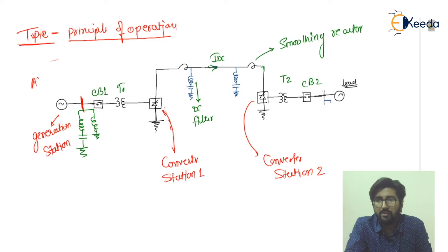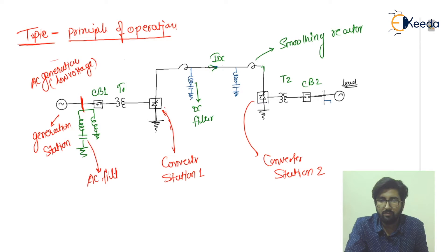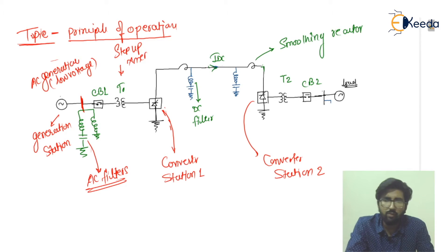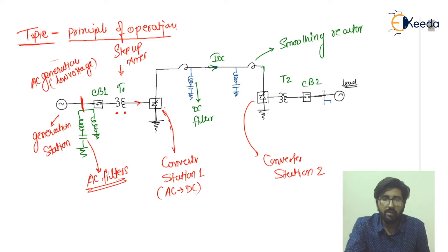At the generation side, power is generated in the form of AC at low voltage. For transmission we need high voltage, so this low voltage AC first passes through the AC filters. Then it goes to the circuit breaker, and then to transformer T1, which is a step-up transformer that increases voltage from primary to secondary.